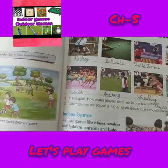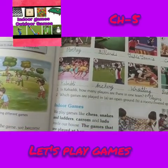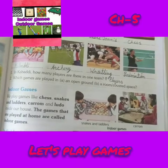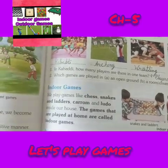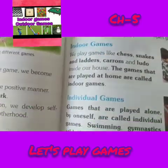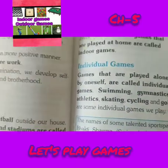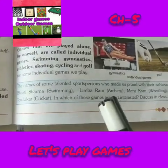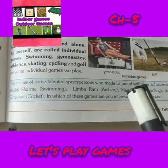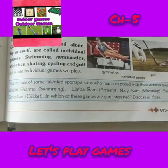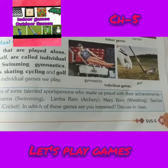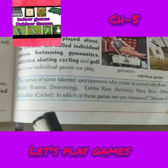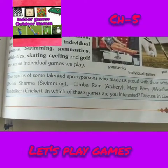In kabaddi, how many players are there in one team? Nine players. In the blue box, you see some sports persons. First one is Bhakti Sharma — swimming. Then limbering, archery, badminton, wrestling. Sachin Tendulkar — cricket.